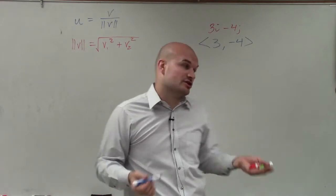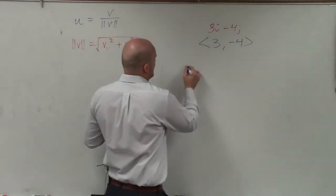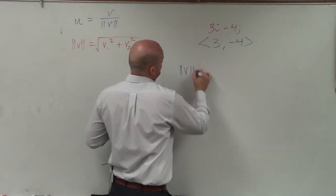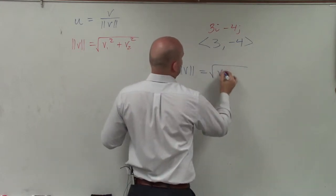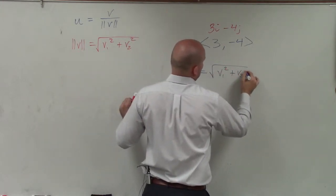So I take the magnitude, and that's going to be the square root of v1 squared plus v2 squared.